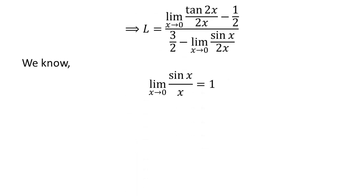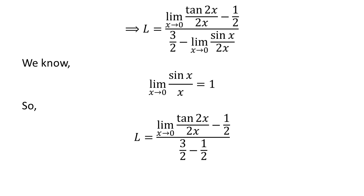We know the limit of sin of x upon x as x approaches 0 is equal to 1. The video in the upper right corner of this video verifies this identity, and the link is also given in the description section. Applying this identity gives us L is equal to the limit of tangent of 2 times x upon 2 times x minus half, upon 3 upon 2 minus half, as x approaches 0.